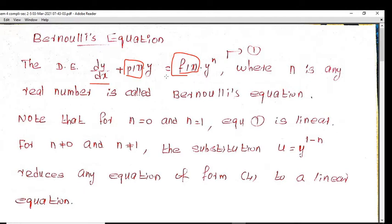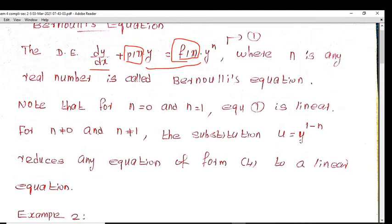If n equals 0, the equation dy/dx plus p(x)y equals f(x) times y to the 0 is a linear equation. If n equals 1, then f(x) into y and p(x) into y gives a separable equation. So for n equal to 0 or 1, it reduces to standard forms.